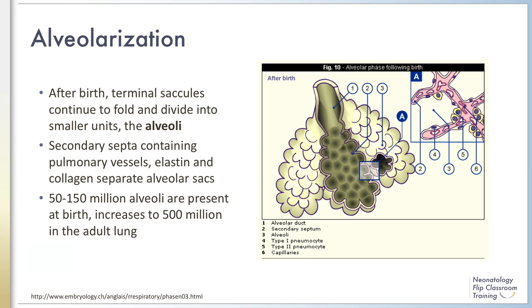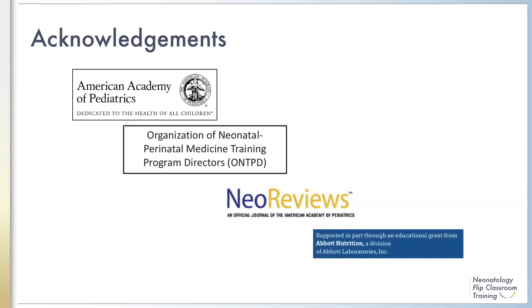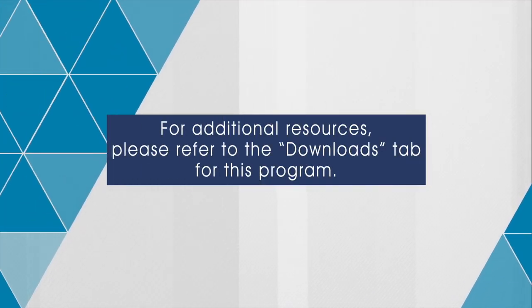This concludes Module 2. In this module, we discussed the five stages of normal lung development. In the next module, we will discuss outcomes of abnormal lung development. We would like to acknowledge the American Academy of Pediatrics, the Organization of Neonatology Training Program Directors, NEO Reviews, and Abbott Nutrition for their support of this educational program.